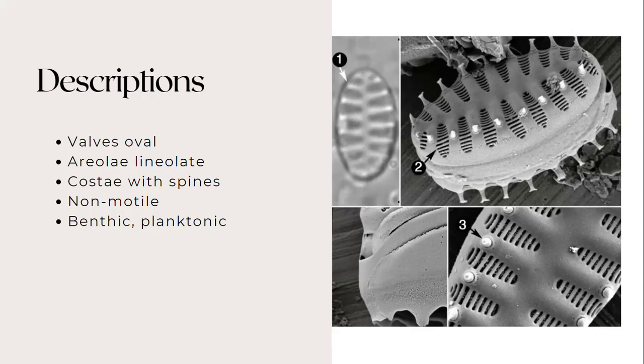the valves are ovoid with rounded ends. The valve face flat or slightly undulate due to raised costae. In girdle view, the frustules are rectangular and form ribbon-like colonies, joined by the linking spines.